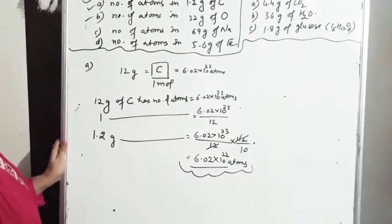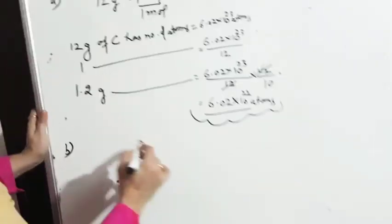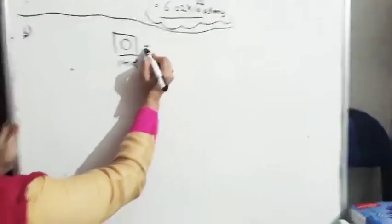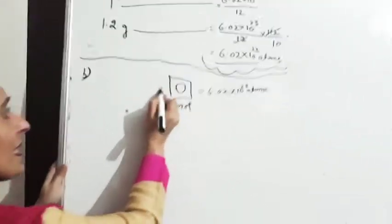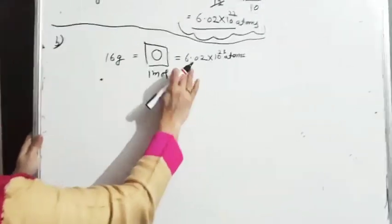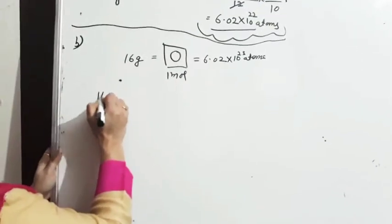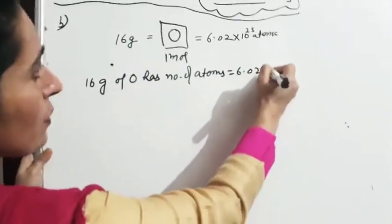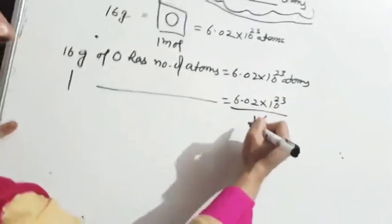Next: number of atoms in 32 gram of oxygen. मैंने यहाँ O2 नहीं लिखा है — atom लिखी है oxygen की. तो center में हम लिखेंगे oxygen. Oxygen का मतलब 1 mole. Oxygen 1 mole means इसके अंदर 6.02 × 10²³ atoms हैं. और इसका atomic mass कितना होता है? 16 gram. उसने पूछा है 32 gram के अंदर कितना होगा. 16 gram of oxygen has number of atoms equal to 6.02 × 10²³ atoms. 1 gram के अंदर कितनी होगी? 6.02 × 10²³ upon 16 atoms.